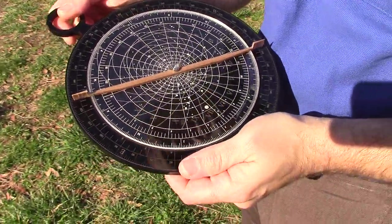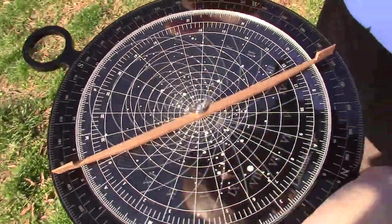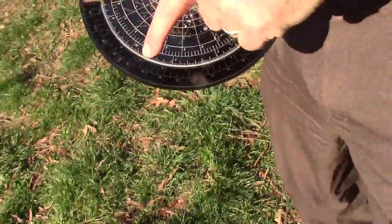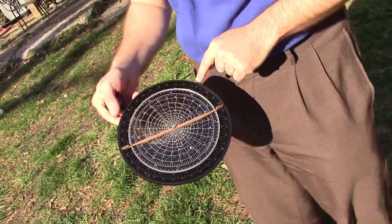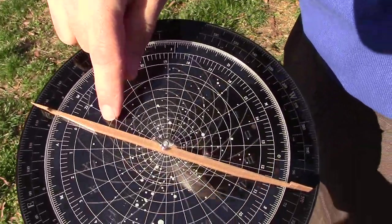Now there's another thing you can measure off of this. This outer ring is a compass. You can see it says north, south, east, and west. How do I know where the sun is located? Well, the sun is there.